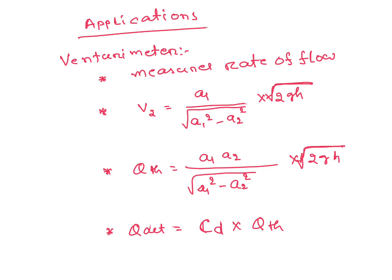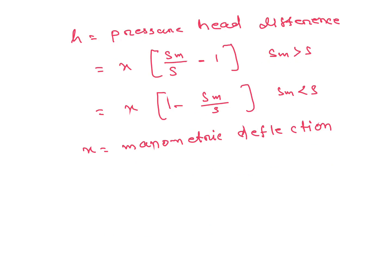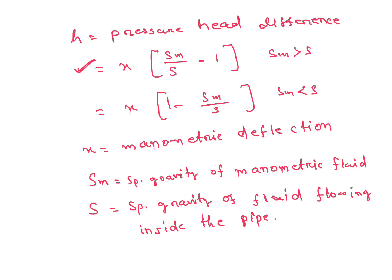Here H is pressure head difference and its value is x(Sm/S - 1) when specific gravity of manometric fluid is greater than specific gravity of liquid flowing inside that pipe. This one when Sm > S, and this one when Sm < S. x is manometric deflection, Sm is specific gravity of manometric fluid, S is specific gravity of fluid flowing inside the pipe. Many times they ask this formula, so this is important. They will ask problems based on this formula.